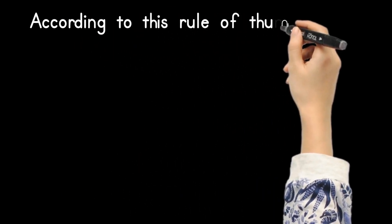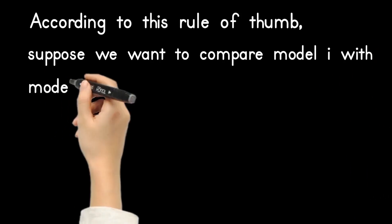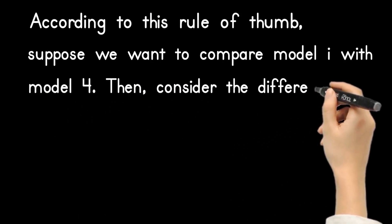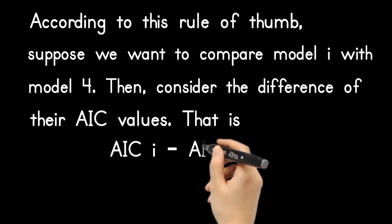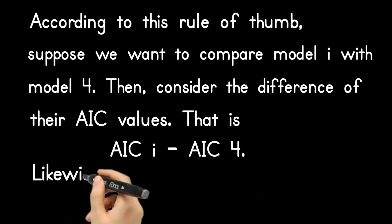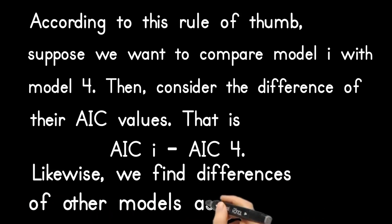According to this rule of thumb, suppose we want to compare model i with model 4. Then, consider the difference of their AIC values. That is AIC i minus AIC 4. Likewise, we find differences of other models as well.